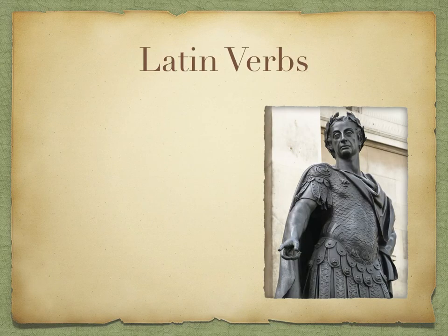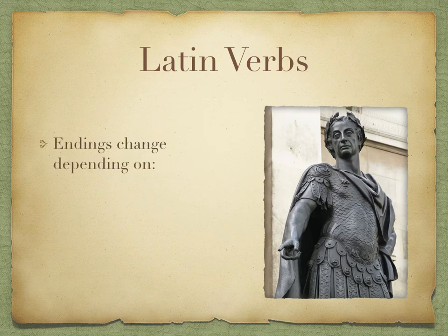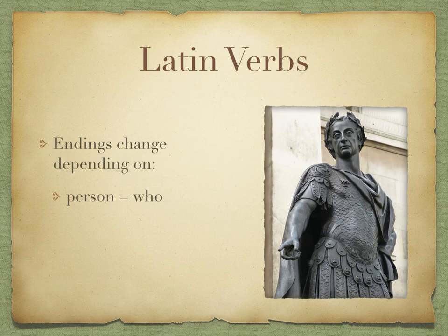The most important thing to be aware of with Latin verbs is that they change their endings depending on different things. The first thing is person, or who is doing the verb. This can be first, second, or third. The second is number, or how many people are doing the verb, and that is either singular or plural.